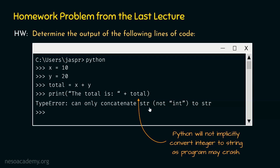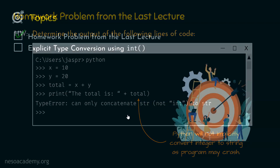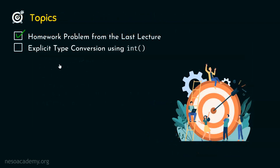So implicit type conversion will never happen in this case. We as programmers need to take the responsibility of converting the type of this object to integer. This is what we will learn in this presentation — explicit type conversion and how we can use int for explicit type conversion.